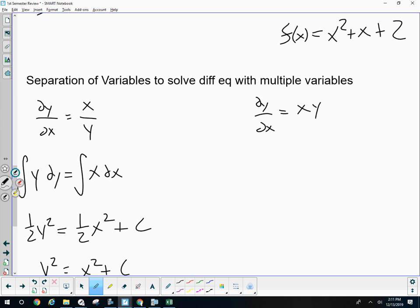If you have x times y, all of a sudden I have 1 over y dy equals x dx. And if I take the antiderivative of both sides, I have a log absolute y and one half x squared plus c. This is when we would need to use e to the power to solve for y.